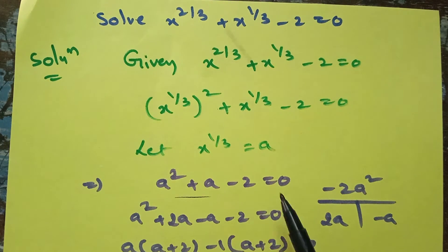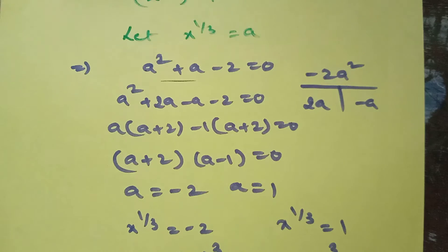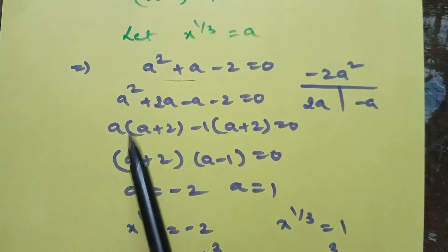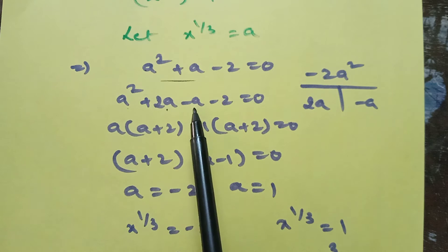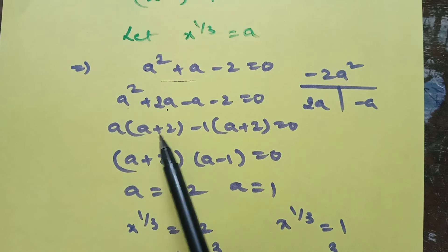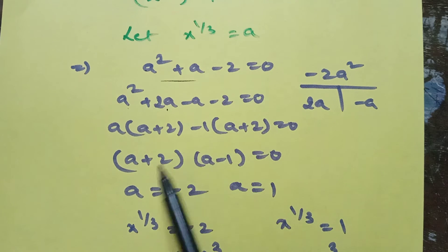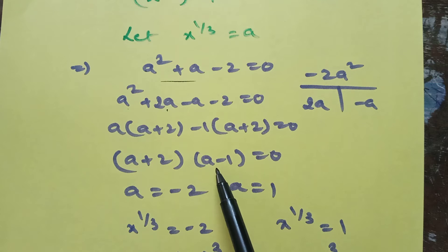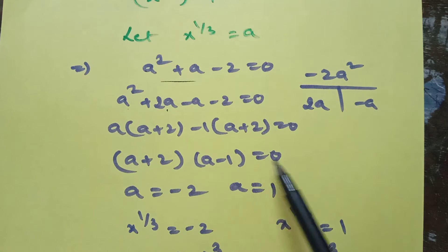To factor the quadratic, split plus a into 2a minus a. So a squared plus 2a minus a minus 2 equals 0. Taking a common from first two terms gives a(a plus 2), and minus 1 common from last two terms gives minus 1(a plus 2). Therefore (a plus 2)(a minus 1) equals 0, giving a = minus 2 or a = 1.